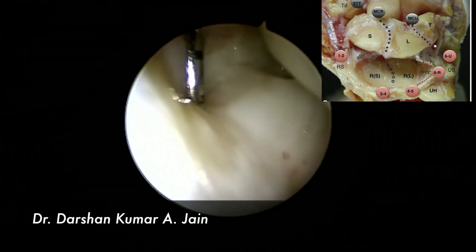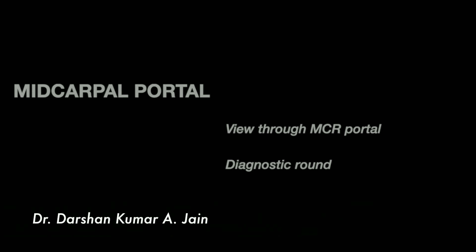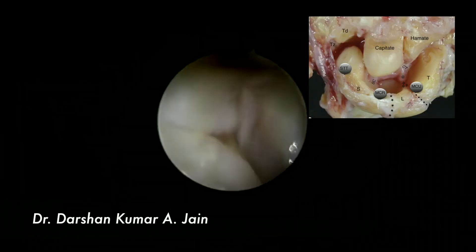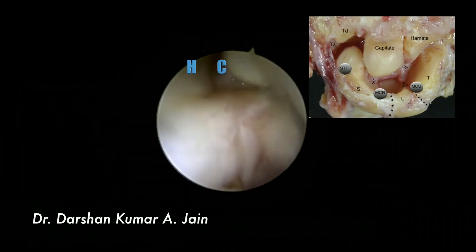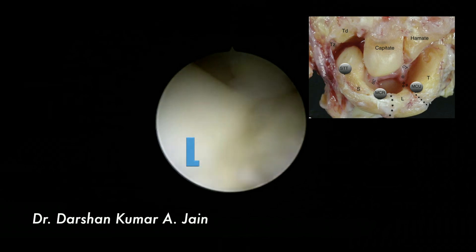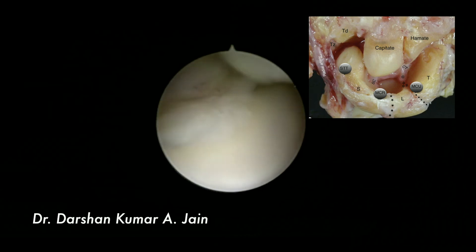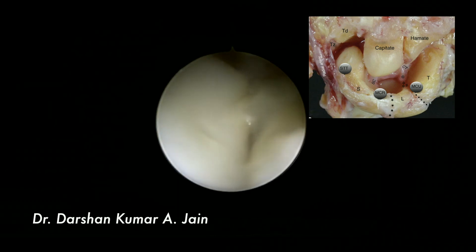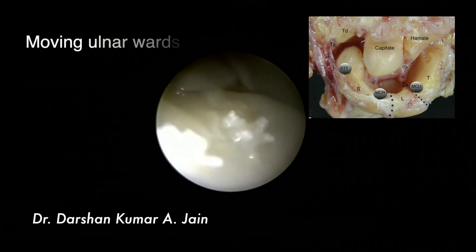Next will be the midcarpal portal, a view through the MCR portal. Once the scope is in the midcarpal portal, that's the hamate, capitate — then you get the orientation, you identify the lunate, the scaphoid-lunate interosseous ligament, the scaphoid, then moving ulnarwards, that's the LT interval.